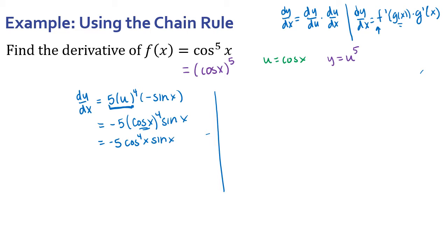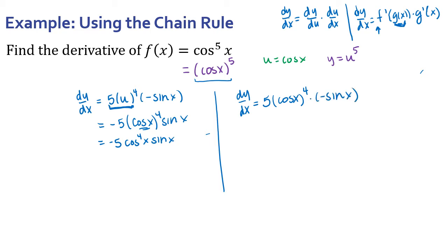If I was doing it the prime way, our outside function is x to the fifth power. The derivative of x to the fifth power gives 5 times something to the fourth power, and that inside function is cosine of x. So what we're doing is visualizing: here's my outside — something to the fifth power — so its derivative is 5 times that something to the fourth, times the derivative of the inside. That's where negative 5 cosine to the fourth x times sine x comes from.